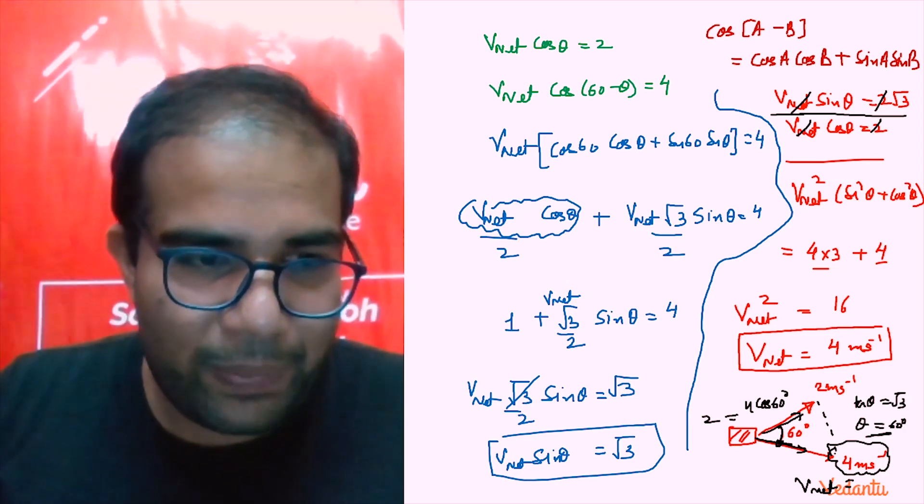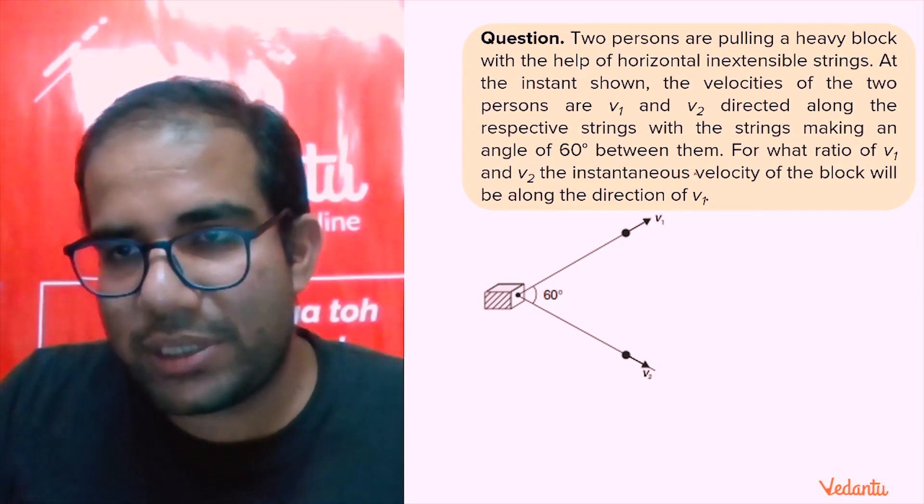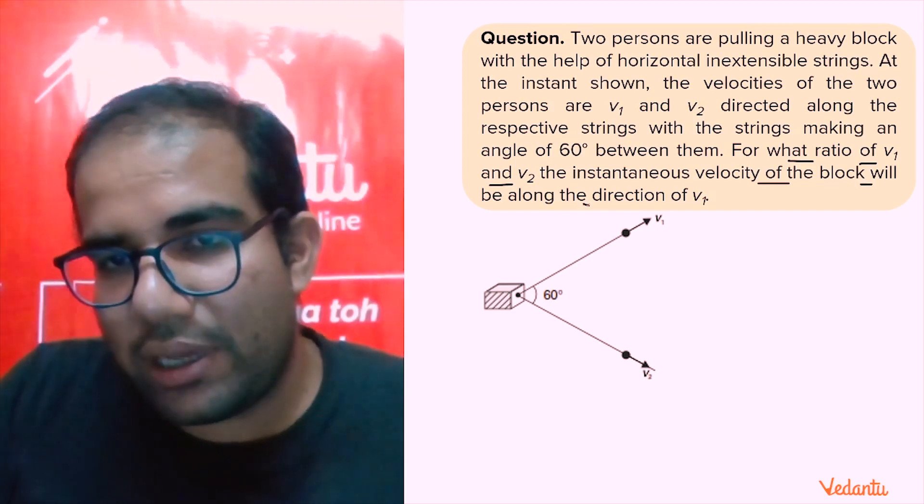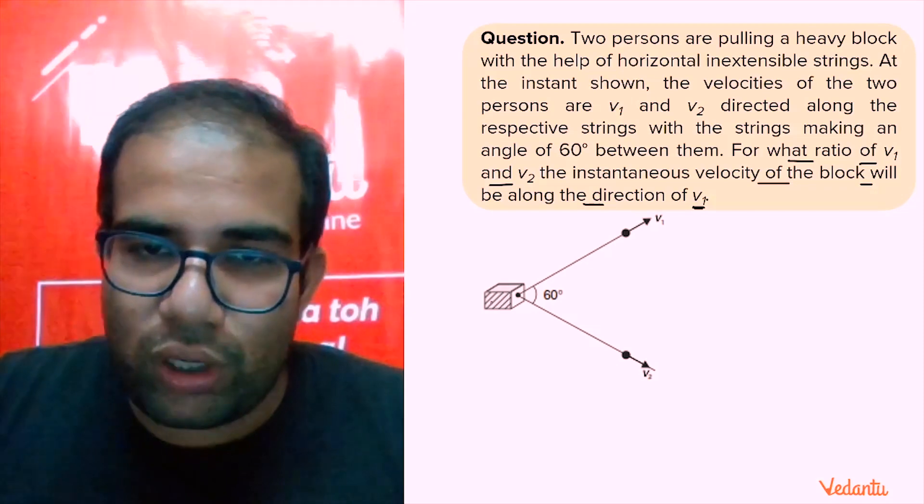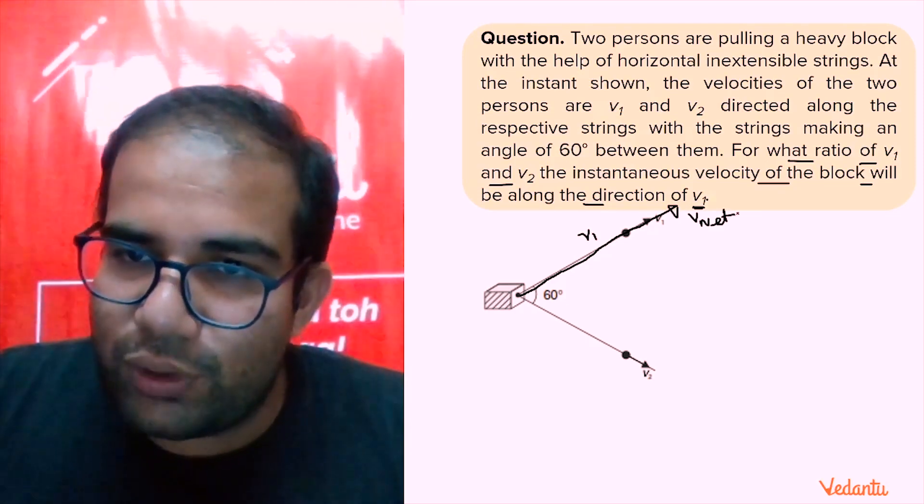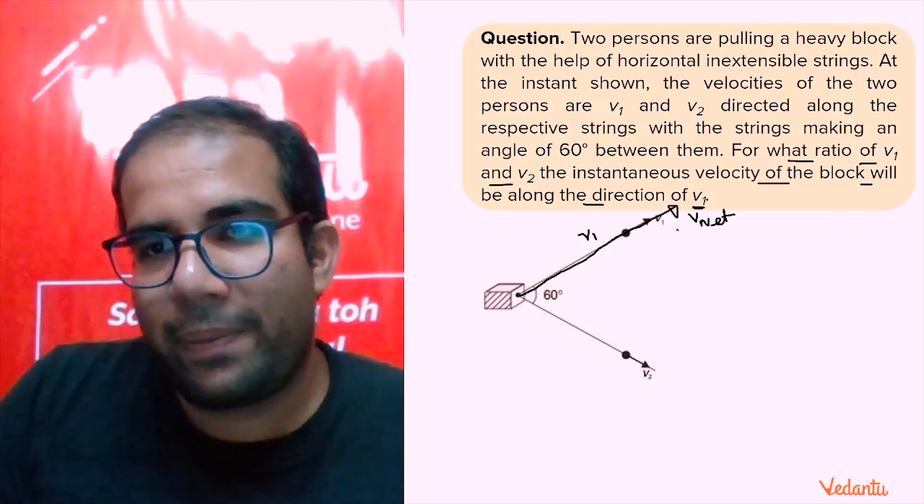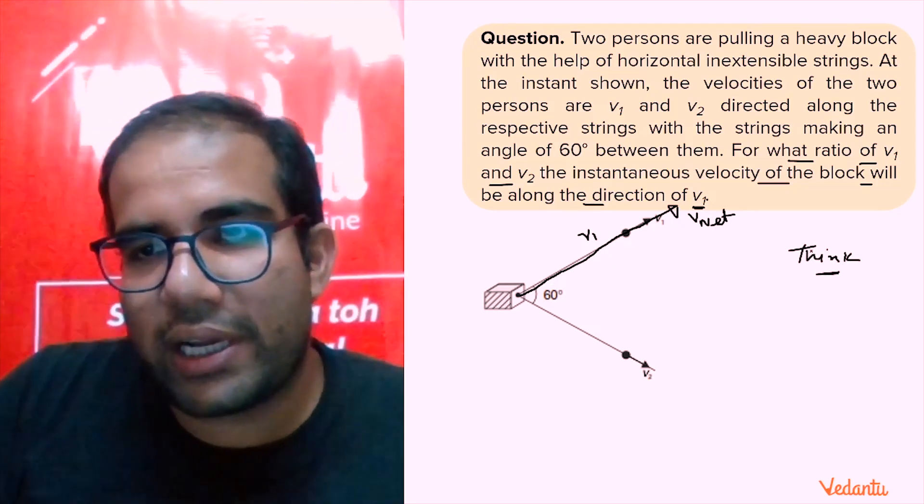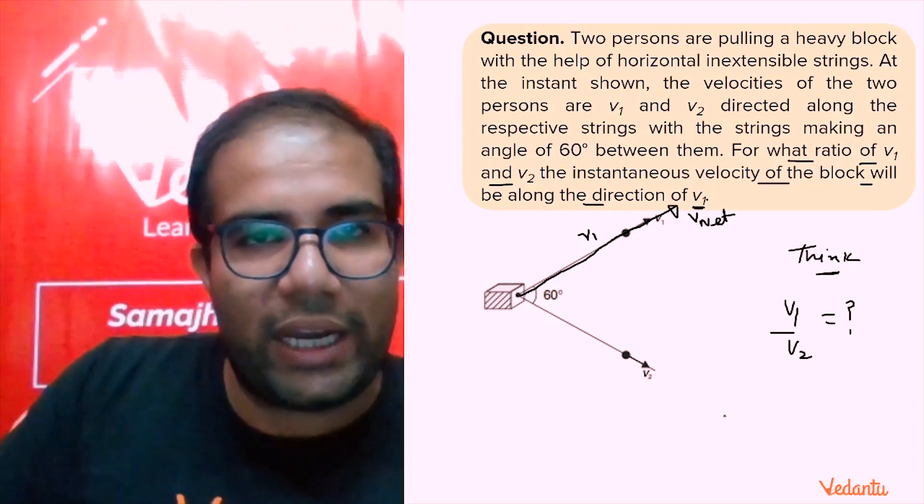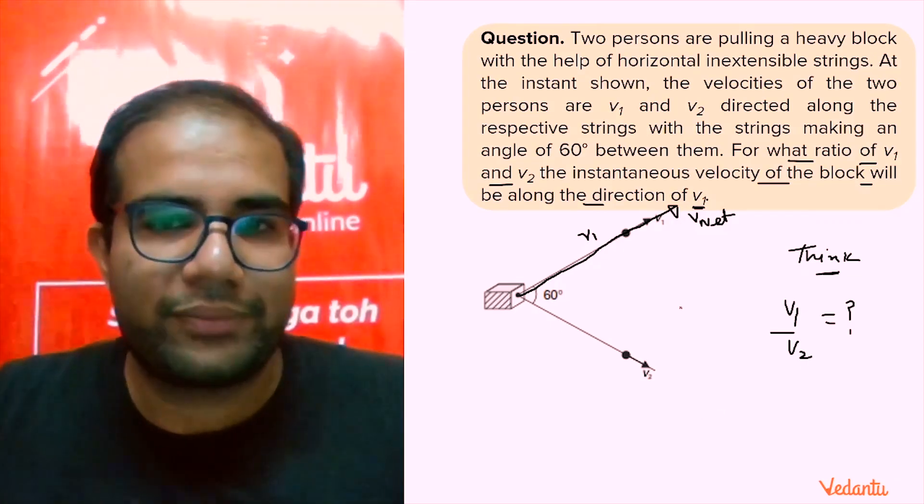I think you must have really enjoyed this. You must have fallen in love with this question. Let me give you one more similar question. Same problem: v1, v2, 60 degrees between them, everything is given. The question is: for what ratio of v1 and v2 will the instantaneous velocity of the block be along the direction of v1? So basically we want v1 to be the net velocity.